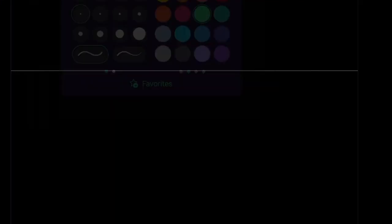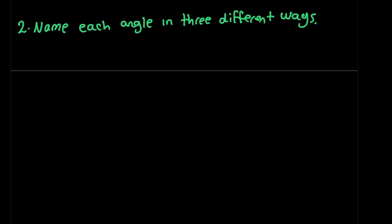I'm going to do another practice. Number two is asking, I'm going to write the question for you. So if you have your notebook ready, you can copy down the questions as well. Name each angle in three different ways.